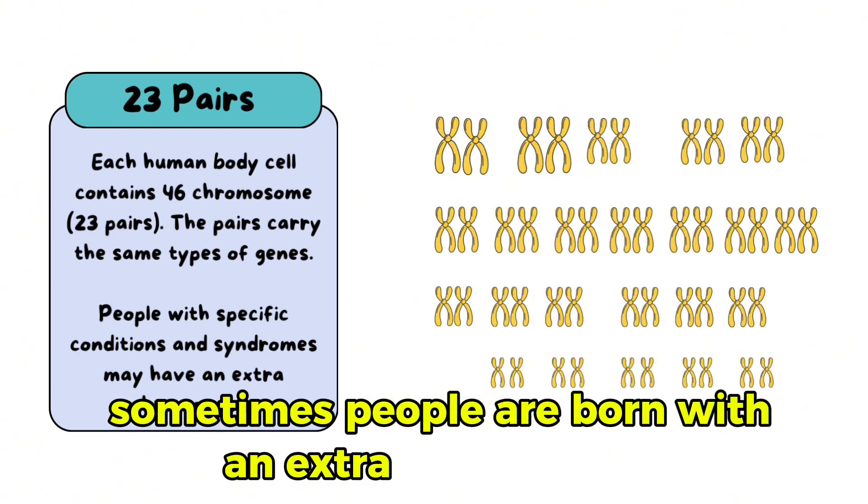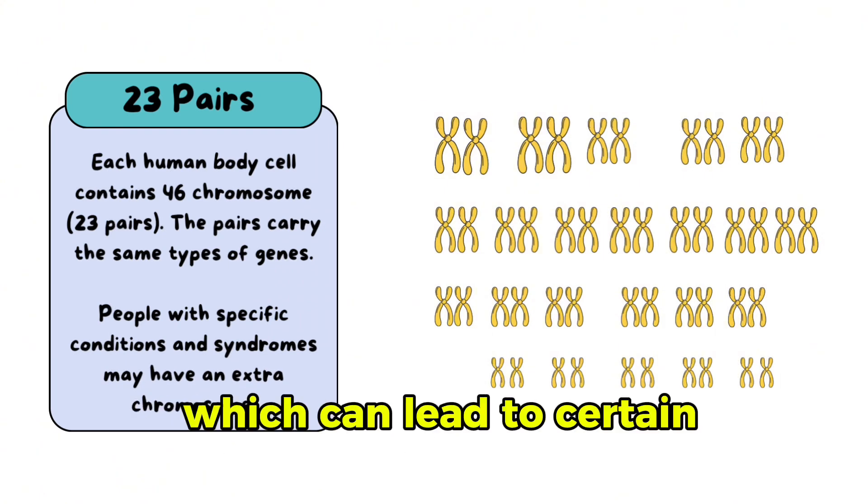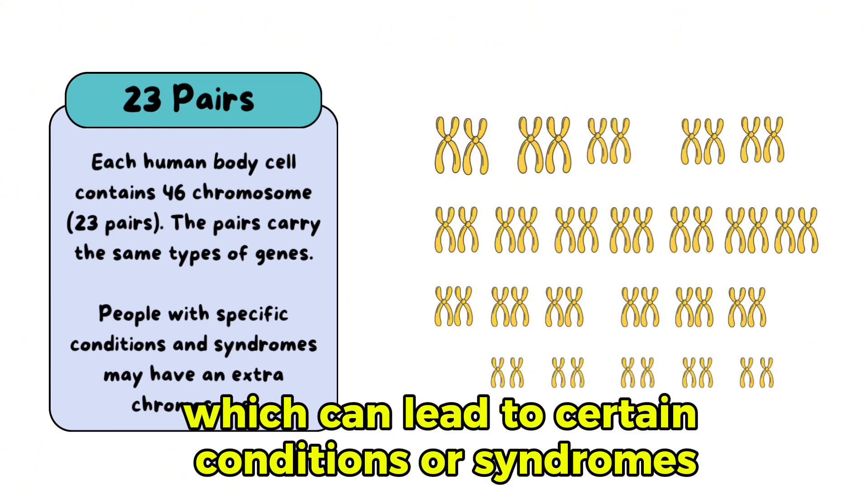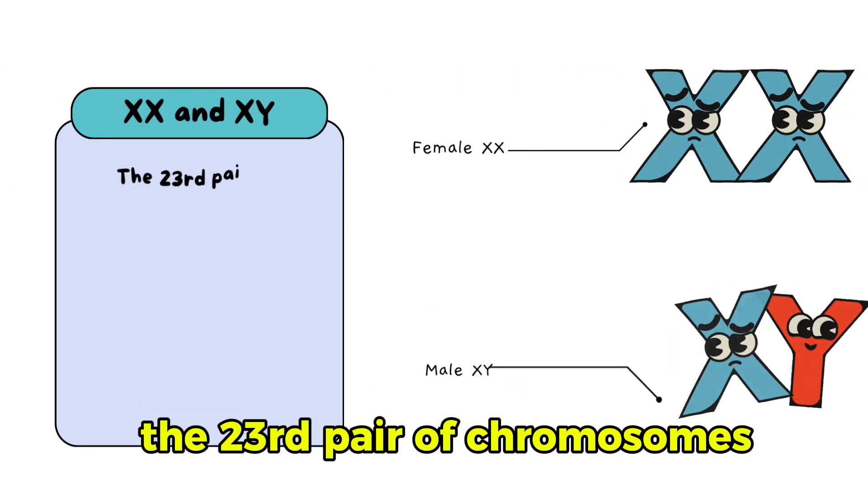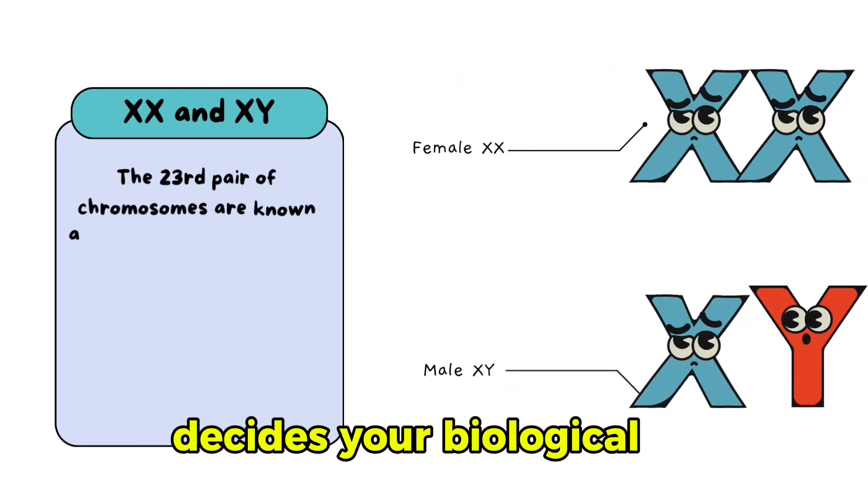Sometimes, people are born with an extra chromosome, which can lead to certain conditions or syndromes. The 23rd pair of chromosomes decides your biological sex.